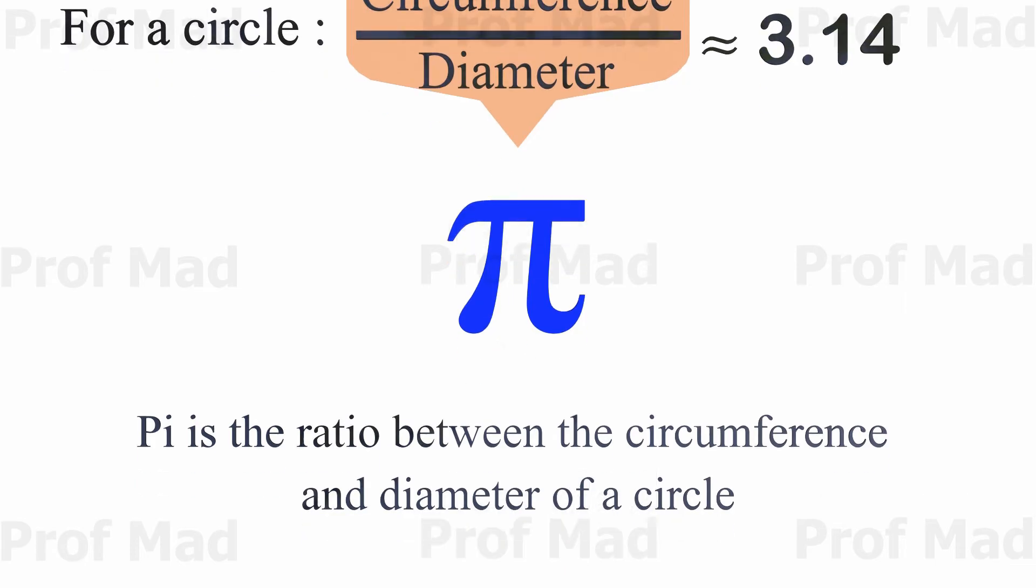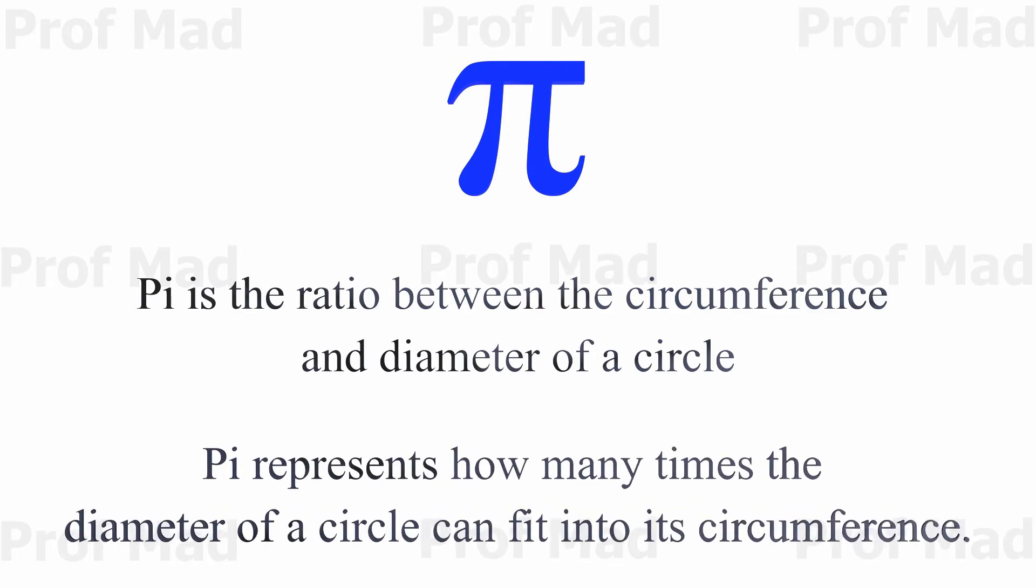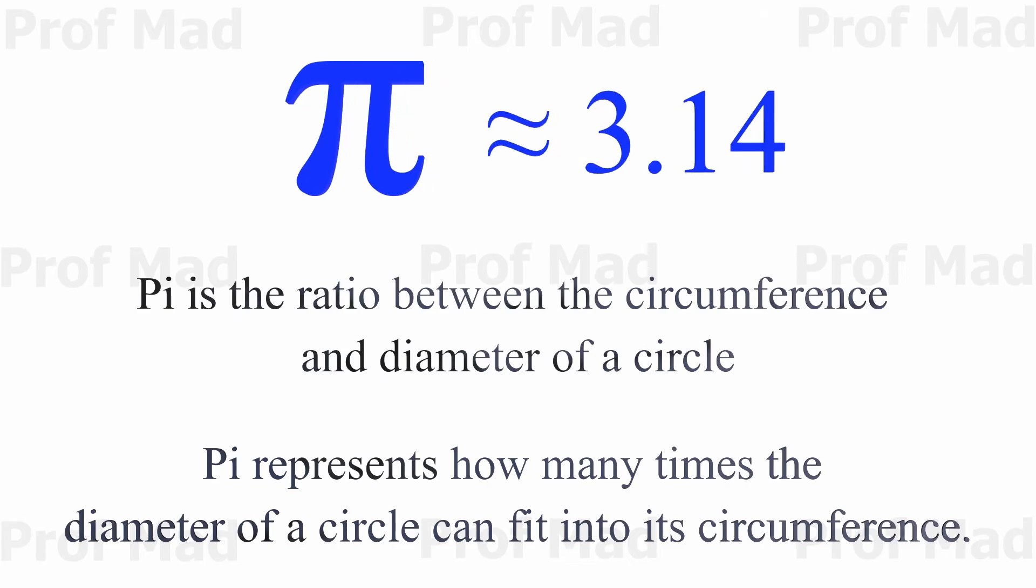So pi is the ratio between circumference and diameter of a circle. In simpler terms, pi represents how many times the diameter of a circle can fit into its circumference. This value is approximately equal to 3.14.